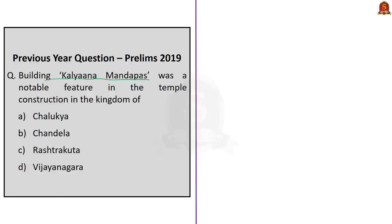Option A: Chalukya. Option B: Chandela. Option C: Rashtrakuta. Option D: Vijayanagara. The question asks us to find which kingdom had Kalyana Mandapas as a notable feature in their temple construction.